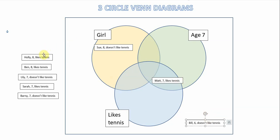Our next child is Holly, a girl who's eight years old and she does like tennis. So we know that Holly's a girl and she likes tennis but she's not seven. So Holly sits just here in the intersection of the likes tennis and girls' set.